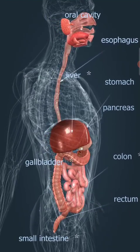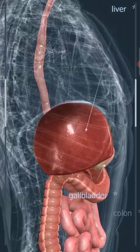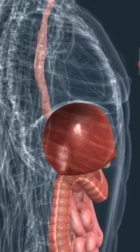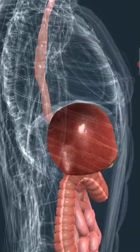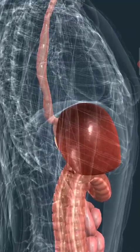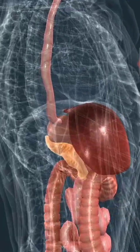Proteins are digested in the stomach, where the environment is highly acidic, and then continue to be digested in the small intestine.